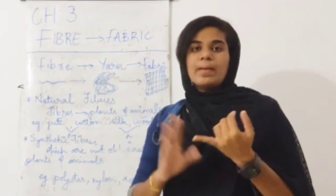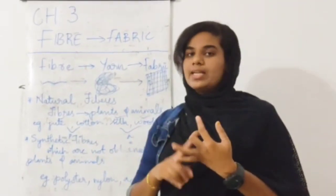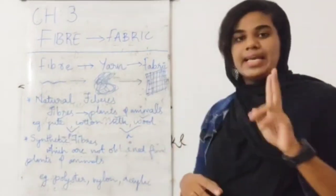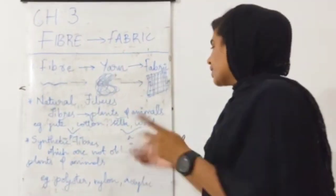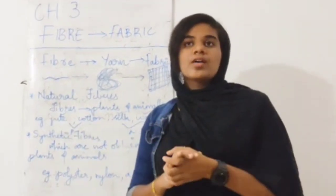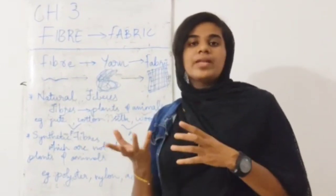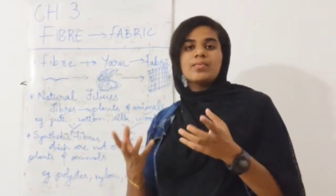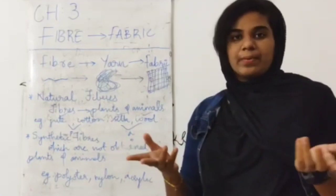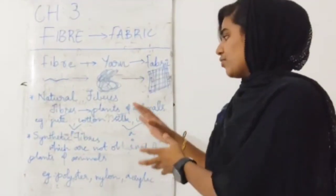Jute comes from the jute plant, and cotton comes from the cotton plant. Animal fibers include silk and wool. Silk is made from the cocoon of a silkworm, and wool comes from sheep.